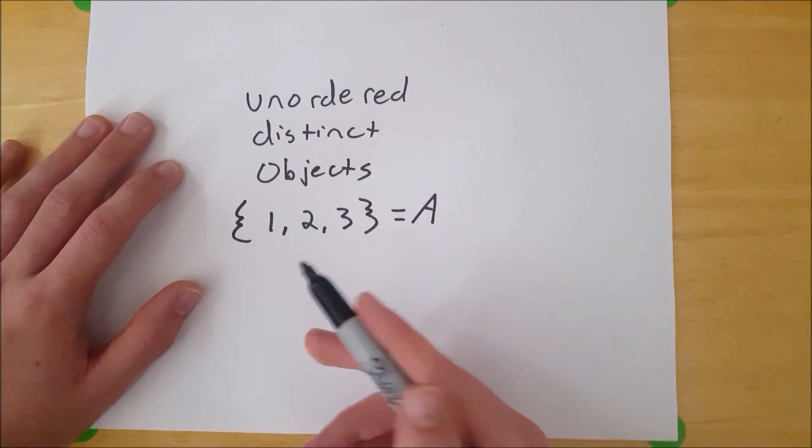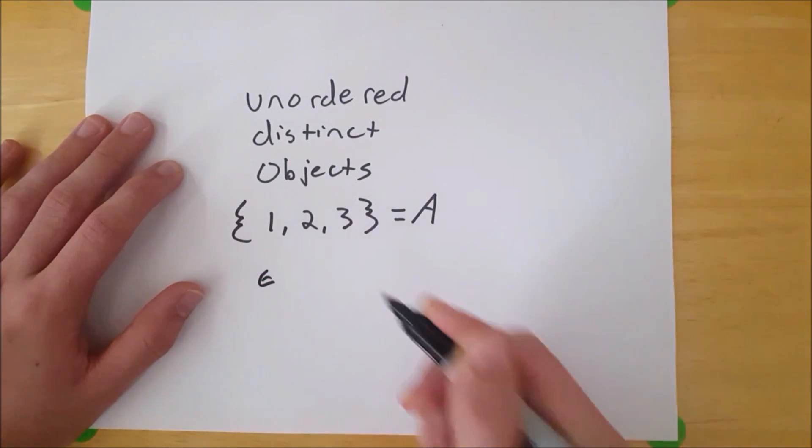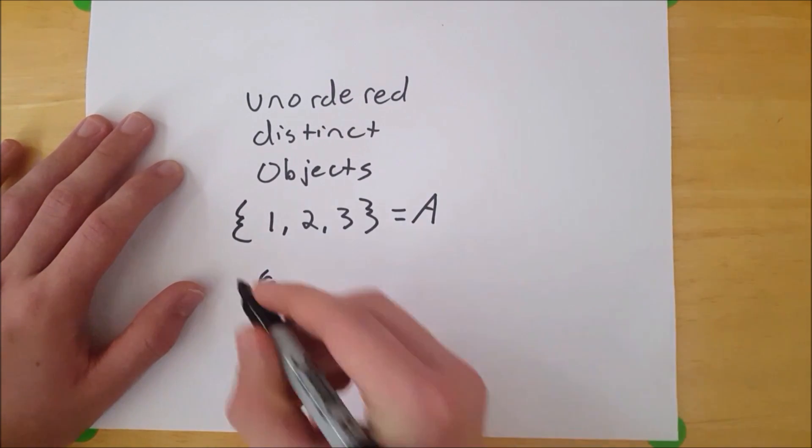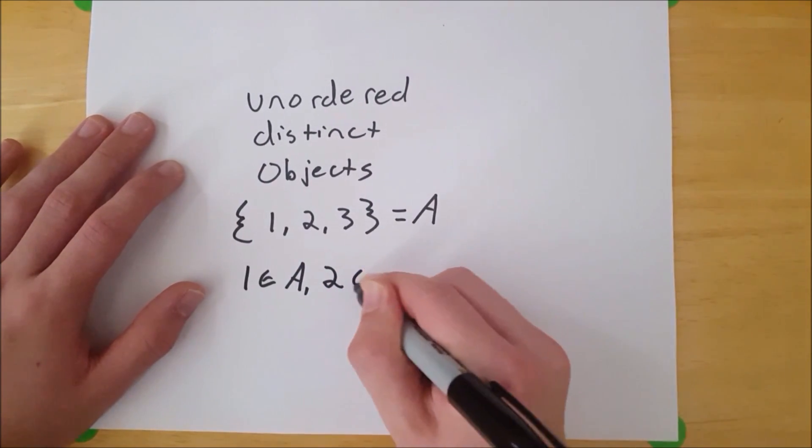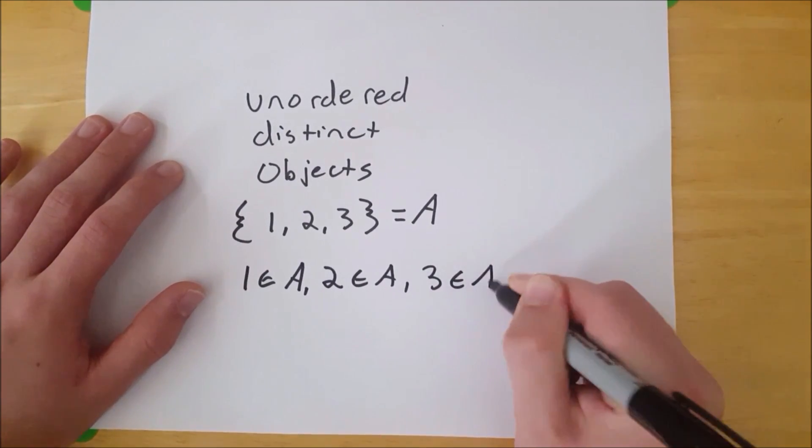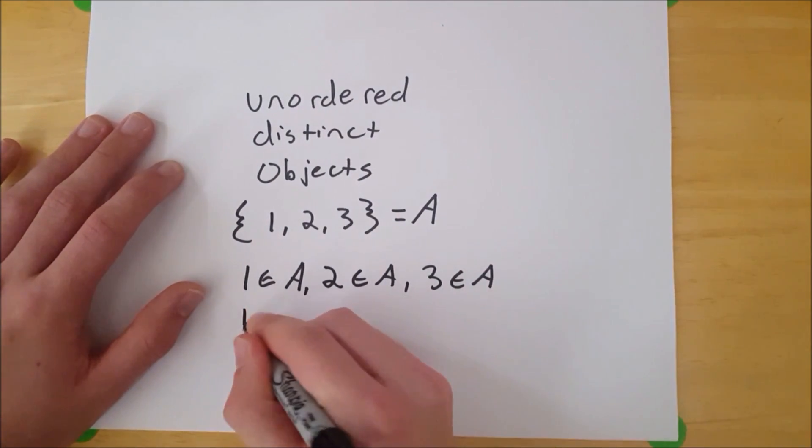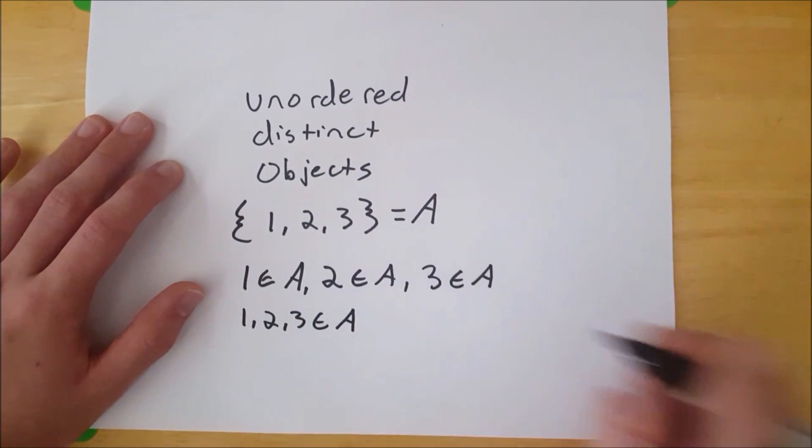So to write that one, two, and three are elements of A, you use this little symbol here, which kind of looks like an E. So that's one is an element of A, two is an element of A, and three is an element of A. More conveniently, you could just write one, two, three elements of A.